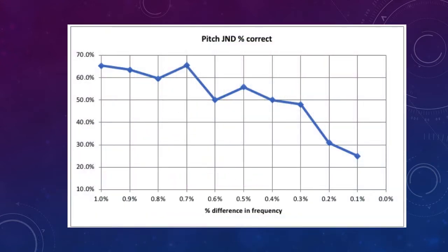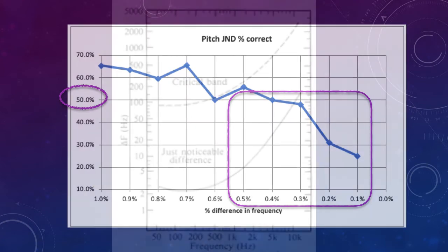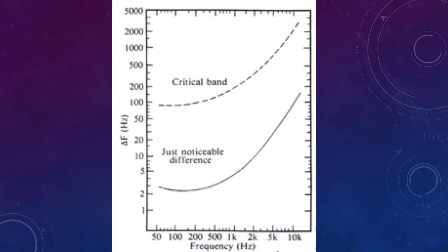Here are the pitch JND results of a previous class. As you can see from the graph, the ability to correctly determine a difference in pitch is below 50%, which is chance guessing, at 5%. As it turns out, the critical band of the ear is about 30 times that of the JND, so the slopes of the curves are almost identical. It is likely that our ability to distinguish pitch is related to the same mechanism in the ear.